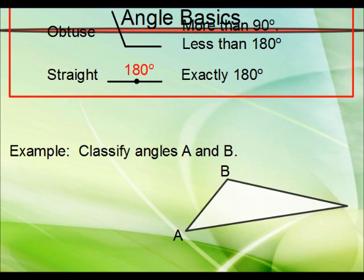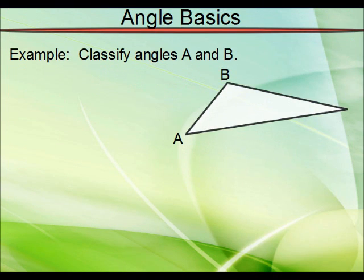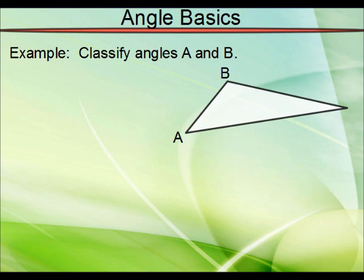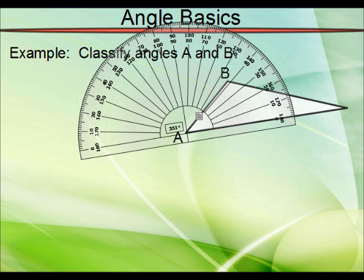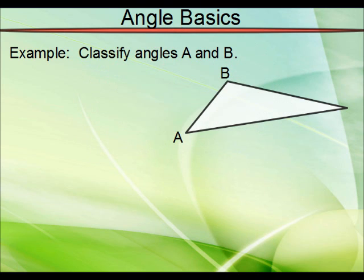So how about we do an example here. Let's say we got this triangle. Let's classify angles A and B. We'll start off with A. You could, if you like, get your protractor out and measure. You can see that the angle is definitely less than 90 degrees. Or you can just use your judgment. That doesn't look like a corner. Therefore, definitely less than 90. So that's an acute angle.